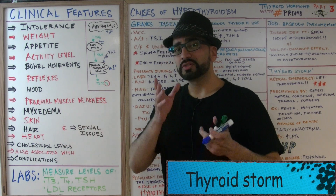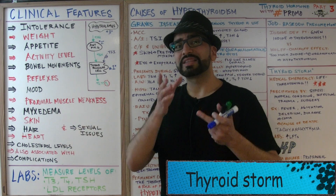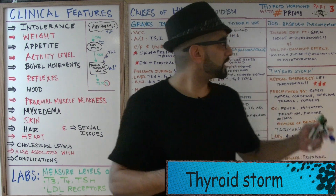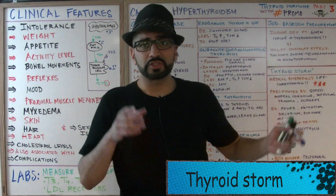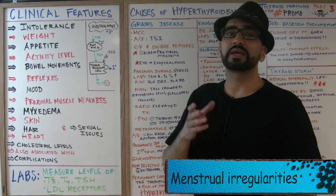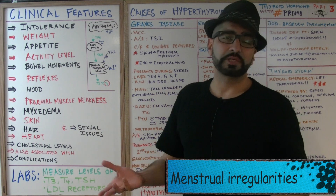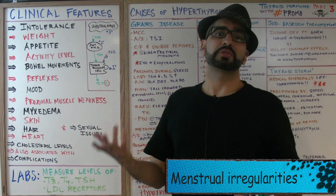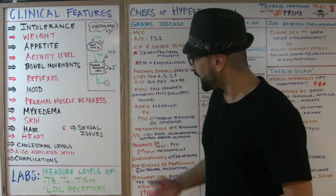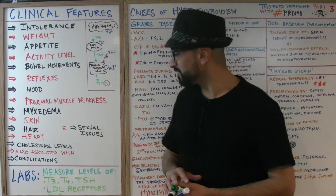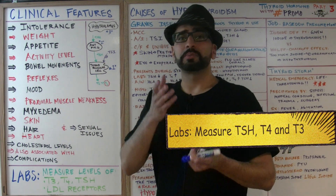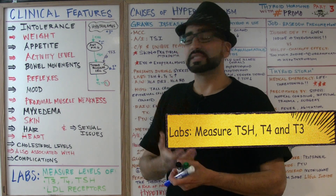For complications, we'll talk about the thyroid storm at the end of the lecture. Also note sexual issues — particularly in females, there will be menstrual irregularities.